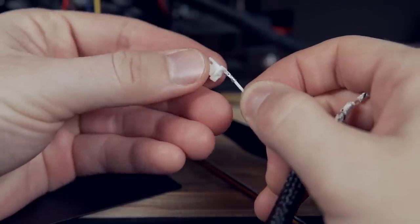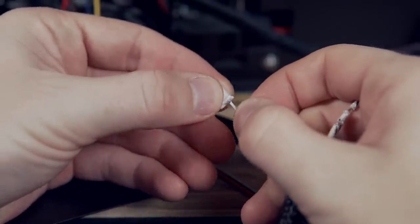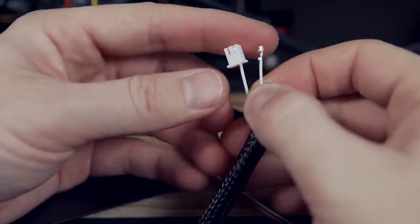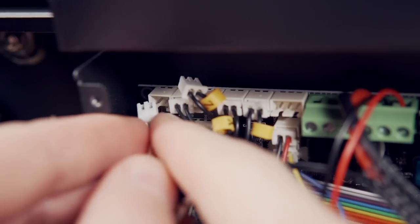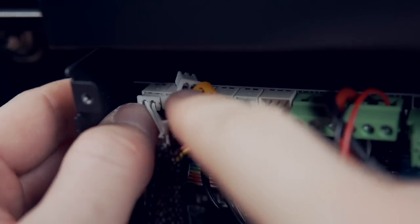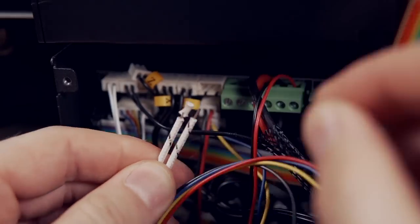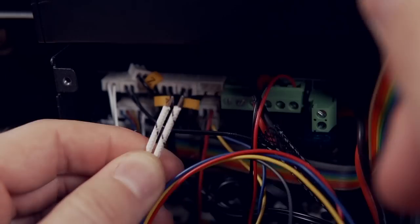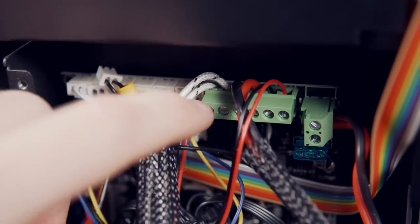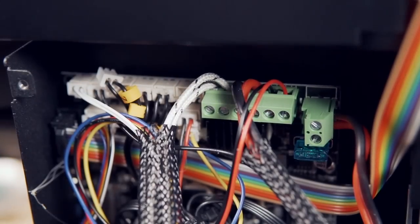I then used the old thermistor plug to insert the leads for the new thermistor, which worked out perfectly, and plugged this into the board in the same exact port that I had removed the old thermistor from. Then taking the new heater cartridge wires, I removed the cover so that way the wire was exposed, and I inserted them into the same clampdown terminal that I had removed the old wires from and made sure that I secured them in place.